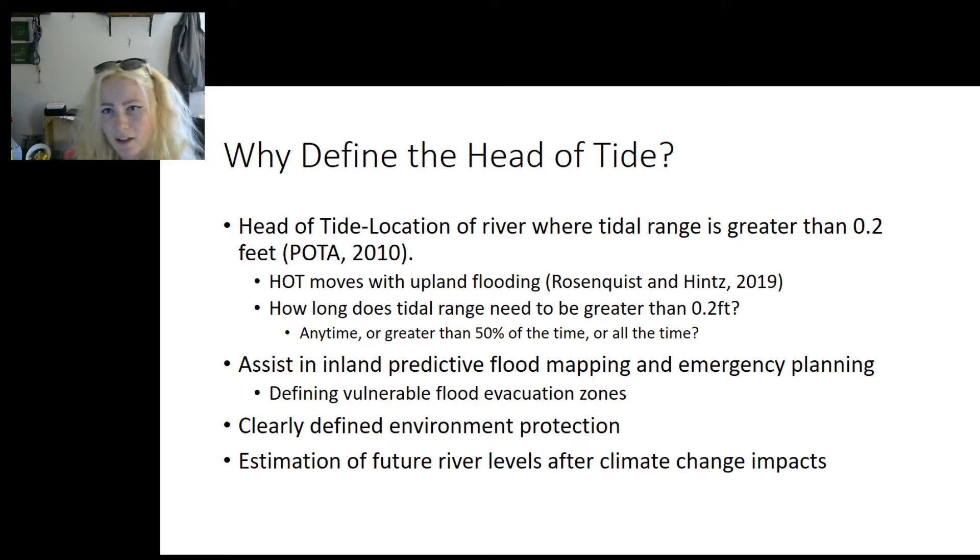Why Define the Head of Tide? Finding ways to identify the head of tide in Georgia is important for defining the state definition of tidal influence in the rivers. The Protection of Tide Waters Act specifies that the head of tide is the location of river where tidal range is greater than 0.2 feet. We want to know how the head of tide moves with upland flooding and how long the tidal range needs to be greater than 0.2 feet for it to fall under the Protection of Tide Waters Act legislation. Defining head of tide and examining how river stage interacts with tide is important for predictive flood mapping and emergency planning.